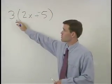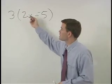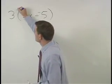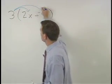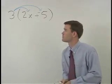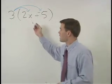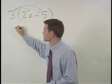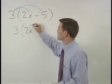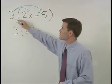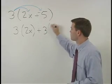Now we can distribute, or multiply, this 3 times each of the terms inside the set of parentheses. So we get 3 times 2x, plus 3 times negative 5.